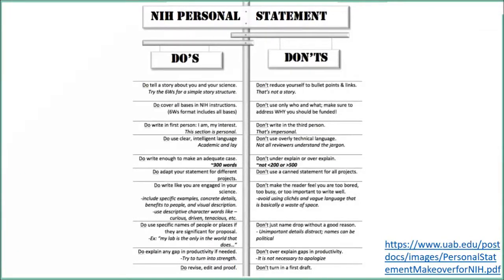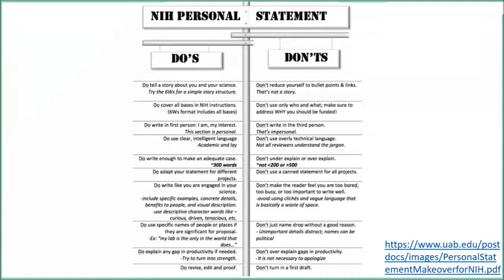Use specific names of people or places if they are significant for the proposal — for example, 'my lab is the only one in the world that does this.' Do explain any gap in productivity and try to turn it into a strength. For clinicians, your clinical training that resulted in a gap in your research productivity can be framed as strengthening your understanding of the physiology. And don't turn in a first draft — revise, edit, and proofread it. Reviewers do read these, especially if you're not familiar with the institution. Make sure you revise it and proof it.